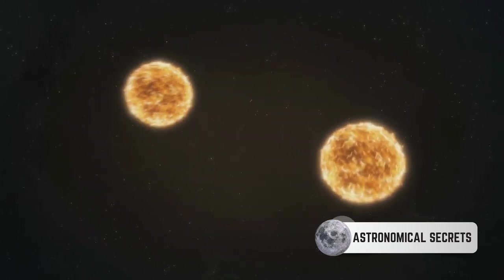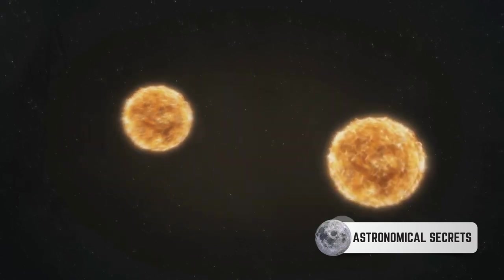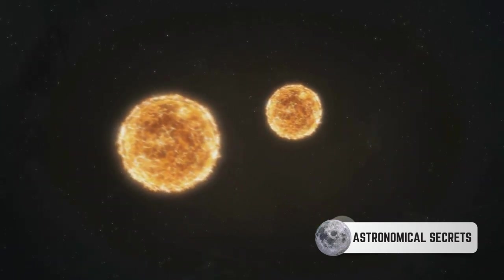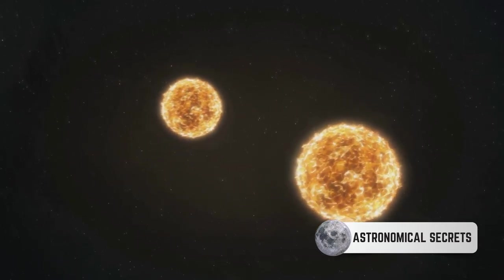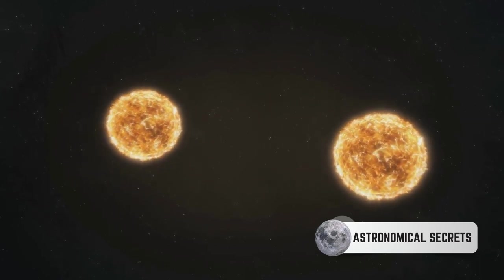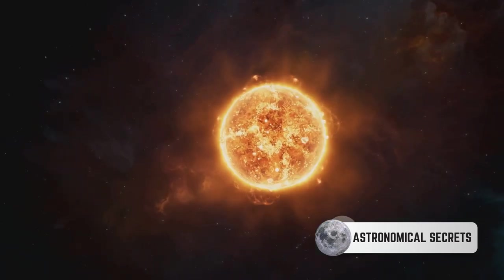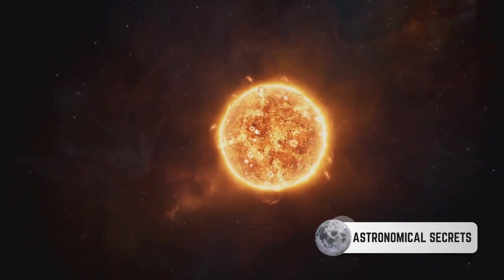The shape of the light curve can tell us about the sizes of the stars. A deeper dip in brightness suggests a larger star passing in front of a smaller one, while a shallow dip might indicate two stars of similar size. The duration of the dip can give us clues about the speed of the stars' orbits and their distance from each other. The color of the light during an eclipse can reveal what the stars are made of, their temperature, and even their age.